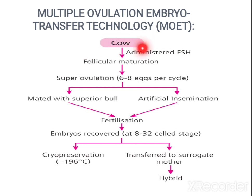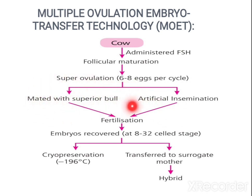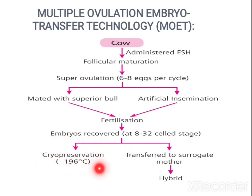Here is the flow diagram. A cow is administered FSH — follicle stimulating hormone — resulting in super ovulation with 6 to 8 eggs per cycle. It can be bred with a superior bull or by means of artificial insemination. Fertilization occurs and embryos are recovered at the 8 to 32 cell stage from the genetic mother and transferred into a surrogate mother to get hybrids, or by means of cryopreservation stored in liquid nitrogen for later use. This is a very important question — study thoroughly.